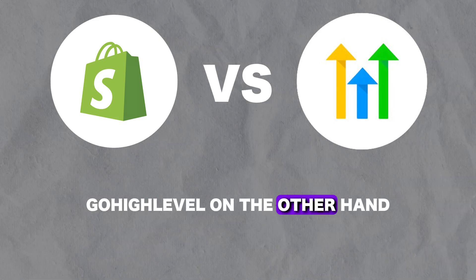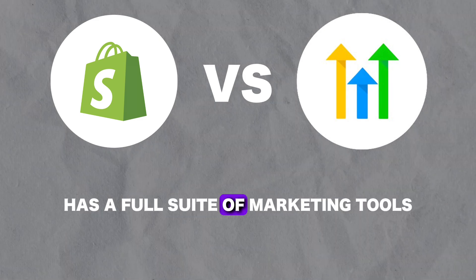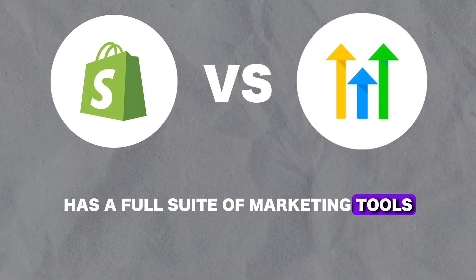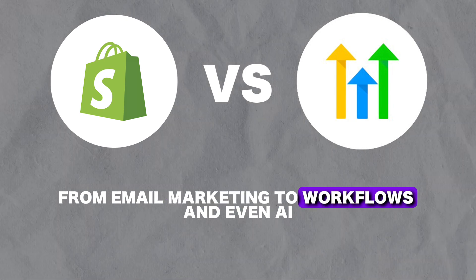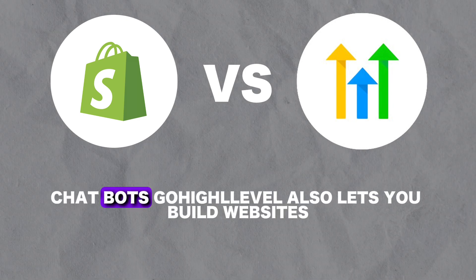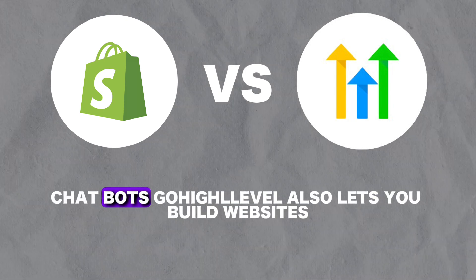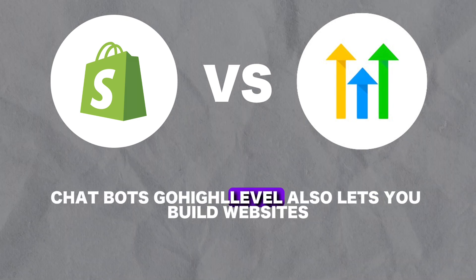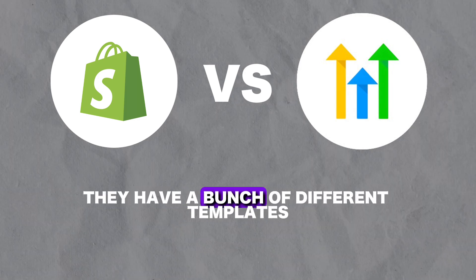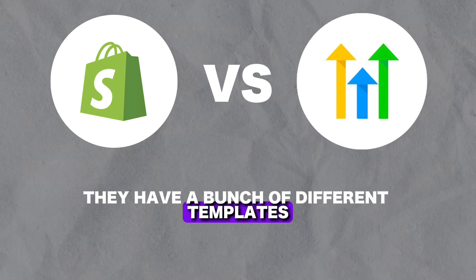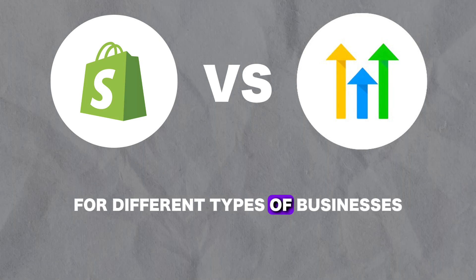GoHighLevel, on the other hand, has a full suite of marketing tools, from email marketing to workflows and even AI chatbots. GoHighLevel also lets you build websites, and they have a bunch of different templates for different types of businesses. That's how they stack up against each other in terms of features.